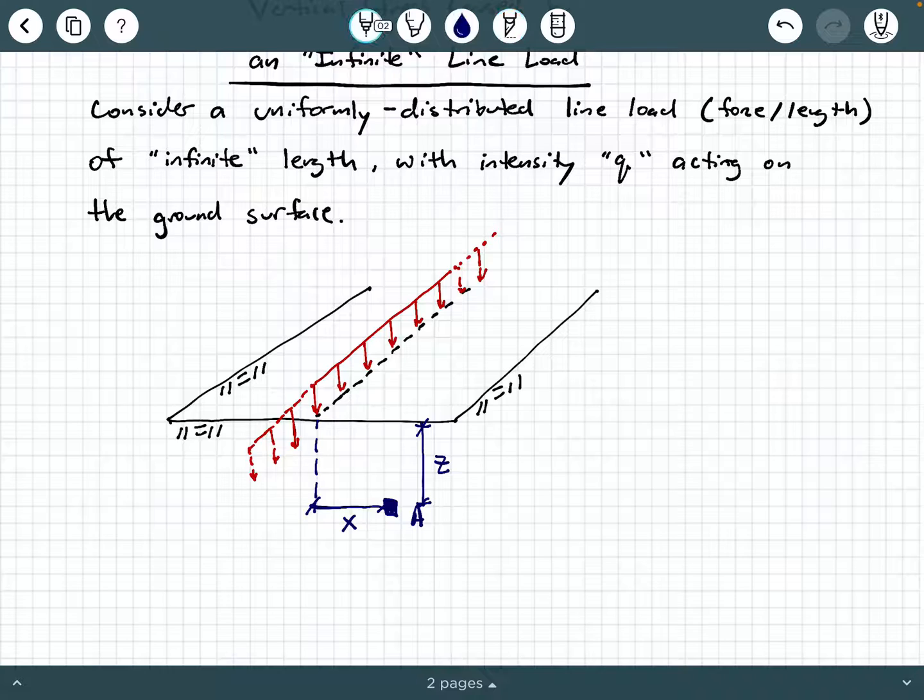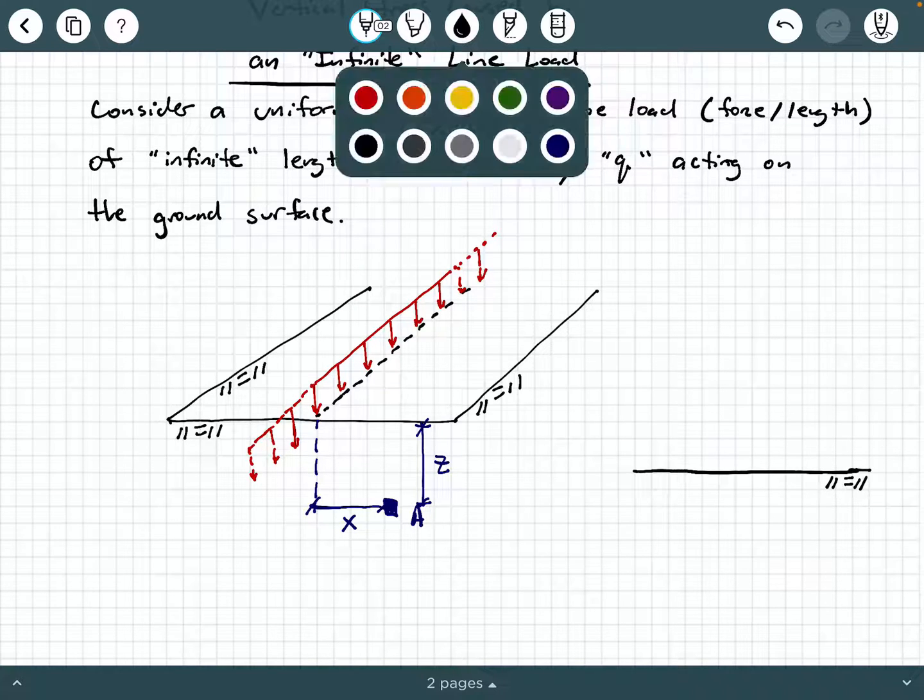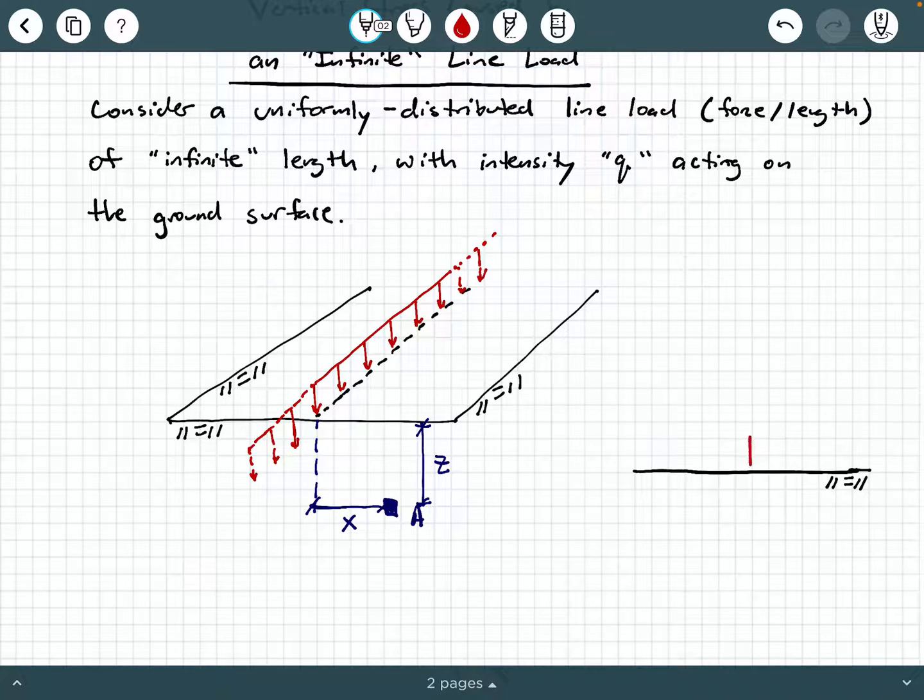So if I were to look at a 2D representation of this figure, then I'm going to sketch it kind of small over here, but let's say that here's the ground surface and let's say that your line load is right here. And again, it has intensity of Q. Now in this 2D figure, our line load Q is coming in and out of the screen at you.